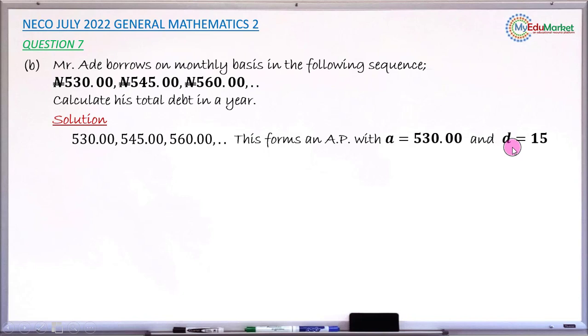So if that is the case, we can now find the total amount of his debt in a year as simple as sum of the first 12 terms of that AP.